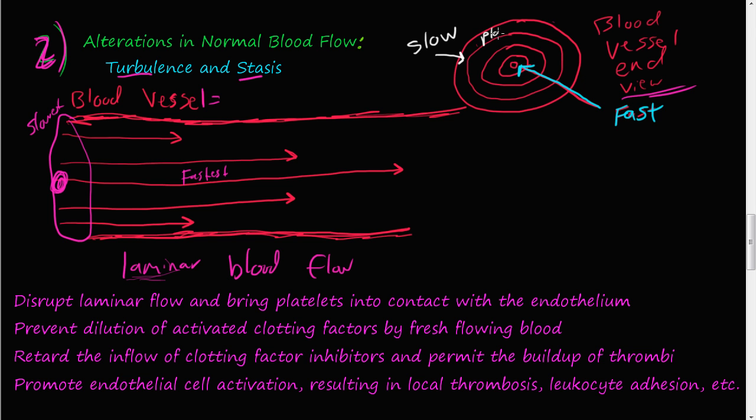And so what this does is the platelets and the bigger molecules, they kind of fly down the middle of the pipe. And the plasma is kind of around the edge here. And what the plasma does is it creates kind of a blanket or a cushion from these endothelial cells here and keeps the platelets and the other bigger molecules away from these sides.